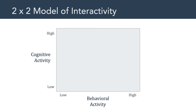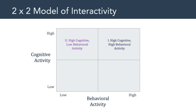On one side, we have cognitive activity, falling along a continuum from low to high cognitive activity. On the other axis, we have behavioral activity, which can be either low or high. Dividing these dimensions up gives us four quadrants: quadrant one has high cognitive and high behavioral activity; quadrant two has high cognitive but low behavioral activity; quadrant three has low cognitive and low behavioral activity; and quadrant four has low cognitive activity with high behavioral activity.